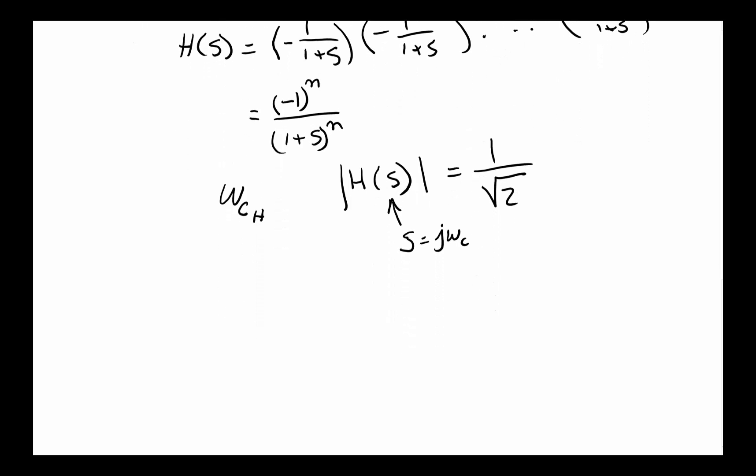So if we carry this through, we will find that omega of the filter with N, the cutoff frequency with N stages cascaded together, is actually going to be equal to, and if you write it in terms of the old frequency,